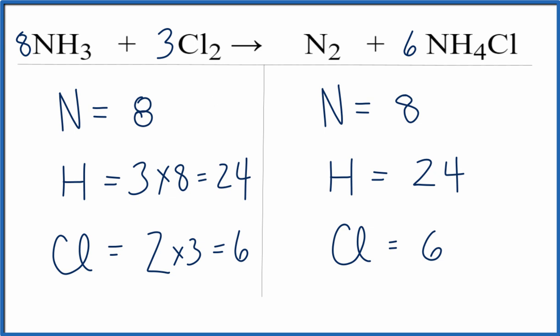That's it. That's the balanced equation for NH3 plus Cl2 yields N2 plus NH4Cl. You may have a better way of doing it. This is how I did it. This is Dr. B. Thanks for watching.